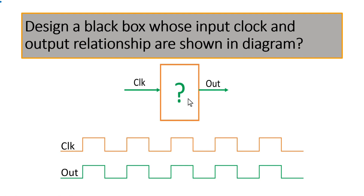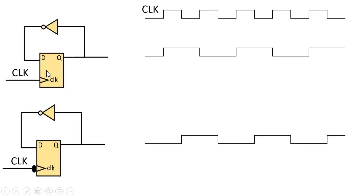You can pause the video here and try to design this black box yourself. The answer requires two clock dividers: one working at the positive edge of the clock and another working at the negative edge of the clock. Both clock dividers are dividing the clock frequency by two.